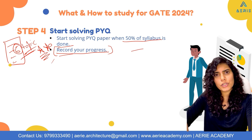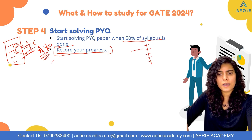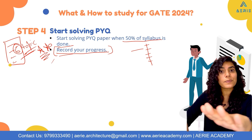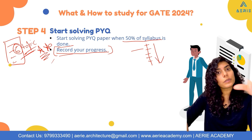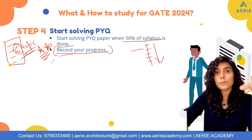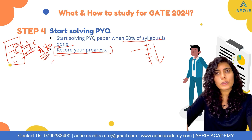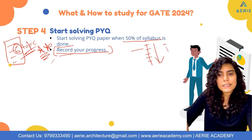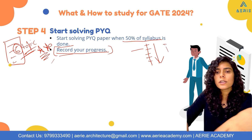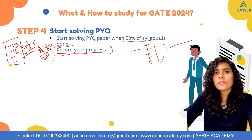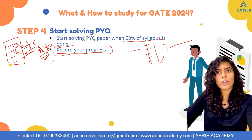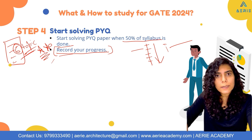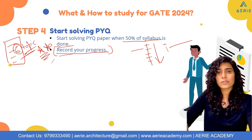Record your progress — this is very important. Make an Excel sheet and note your marks for every previous year question paper you solve. You'll get to know whether you're improving with each test or staying consistent. This helps you identify which topics require more attention and where to spend more time.